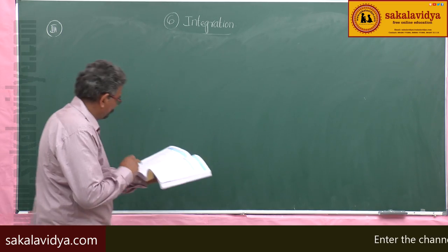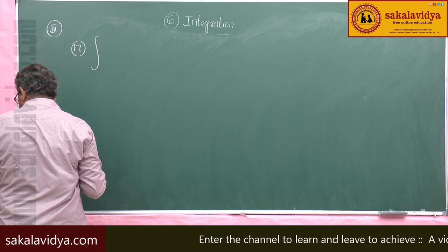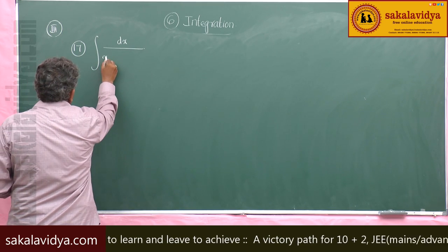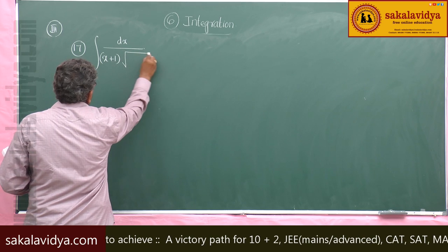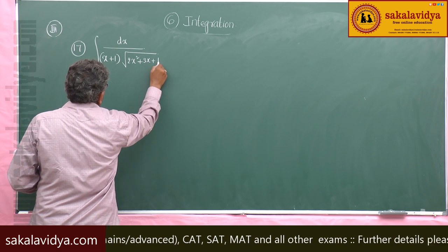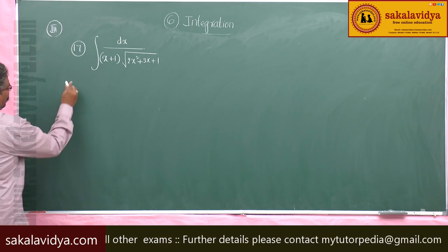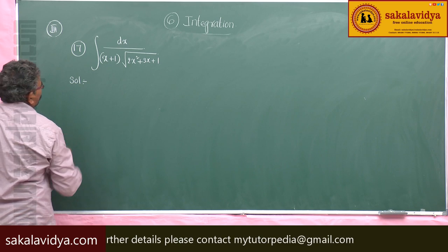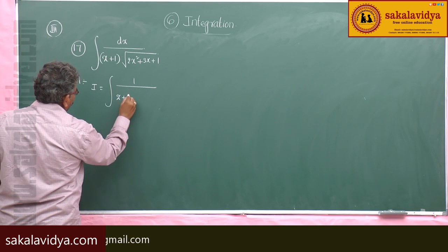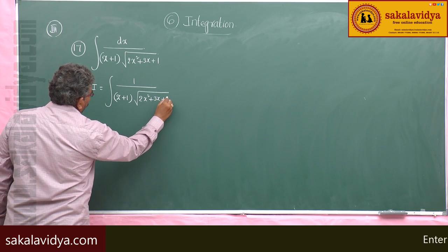17th problem. Evaluate integral dx by (x plus 1) root over (2x squared plus 3x plus 1). Solution: I equals integral 1 by (x plus 1) root of (2x squared plus 3x plus 1) dx.